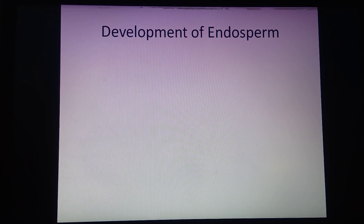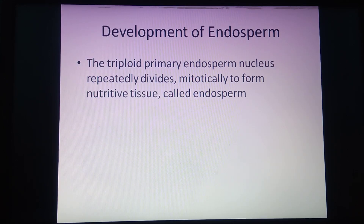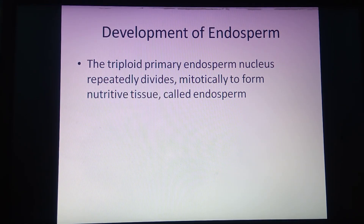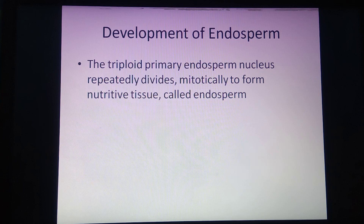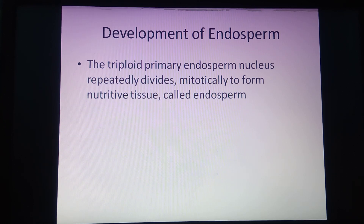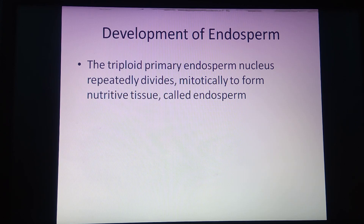Development of endosperm. In this topic, reproduction in lower and higher plants, we have discussed the process of double fertilization and its significance. The next point is development of endosperm. The triploid primary endospermic nucleus undergoes repetitive mitotic division, resulting in the formation of a nutritive tissue called endosperm. The endosperm is helpful in providing nourishment to the developing embryo and is triploid in nature.